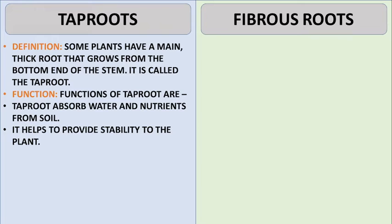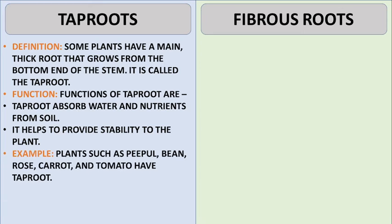Taproots absorb water and nutrients from soil. They help provide stability to the plant. Examples of plants that have taproots are peepal, bean, rose, carrot and tomato.